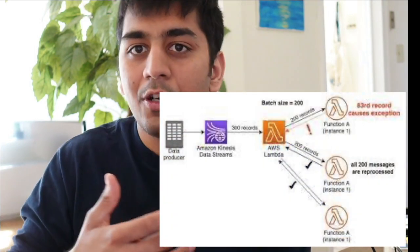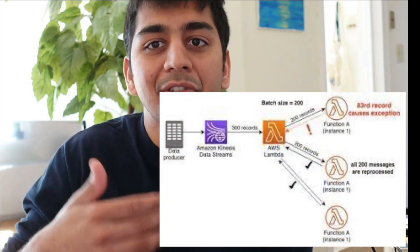The next service in the list is AWS Kinesis. AWS Kinesis is a managed streaming solution by AWS that can be used to process real-time streaming data. As a data engineer it is very important to learn how to process real-time streaming data. Consider how you can attach a Lambda function with Kinesis to process real-time data.